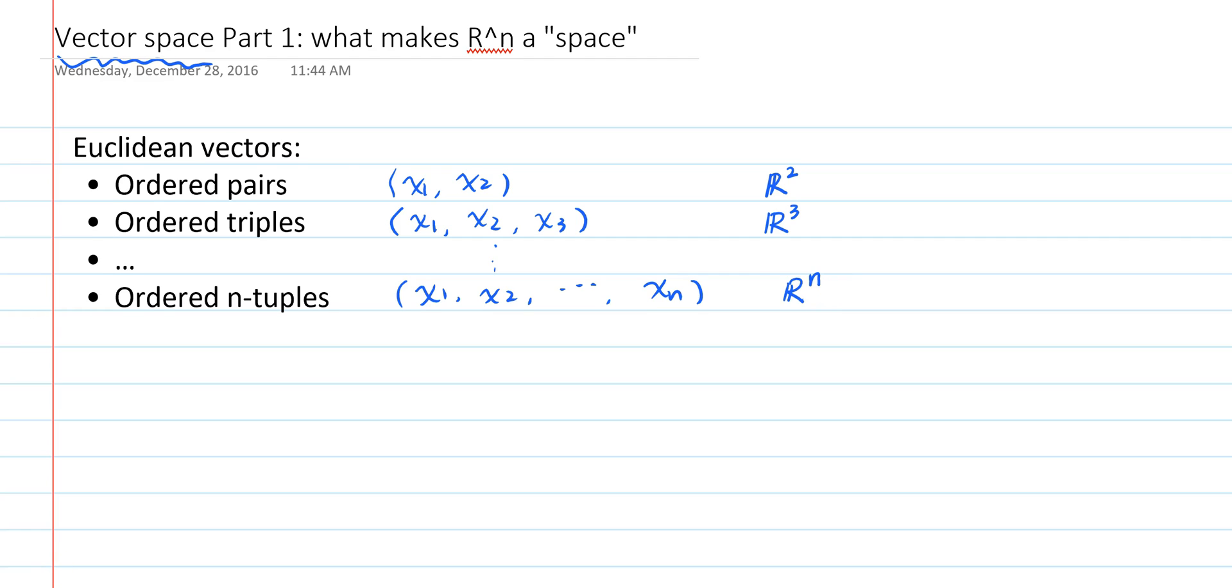In the videos to follow, we are going to extend the concept of vectors to a more abstract level. We are going to do that by summarizing the essential properties of the Euclidean space R^n, and using those properties to define a concept called vector space.